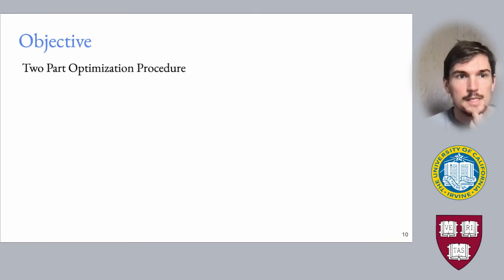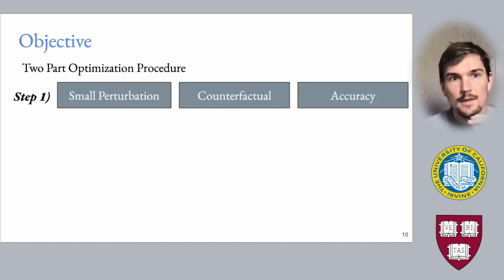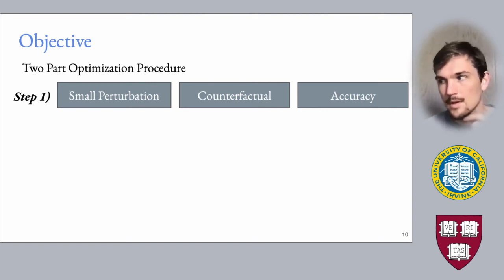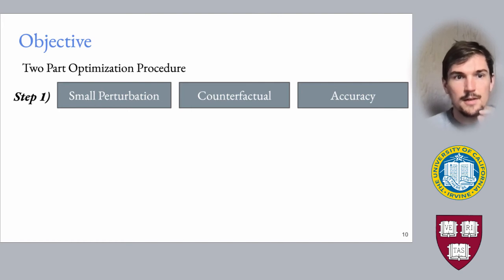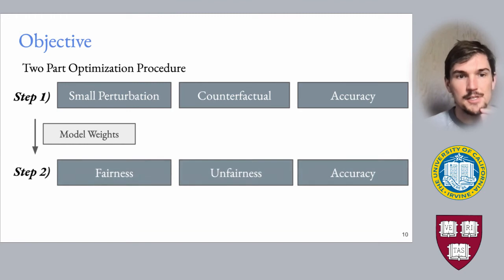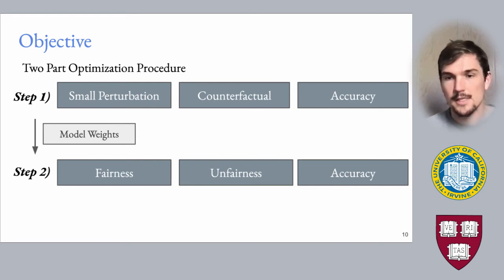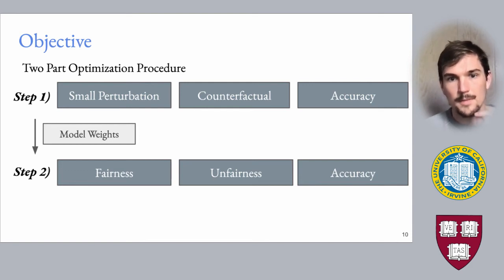We consider a two-part optimization procedure to satisfy these criteria. First, we ensure the perturbation is small, the model is similarly accurate, and under the perturbation, counterfactuals are returned. After optimizing for this initial set of criteria, the model weights are passed to the second step, along with perturbation delta. The second step mostly ensures that fairness on unperturbed instances is consistent, accuracy is retained, and counterfactuals under the perturbation are unfair.